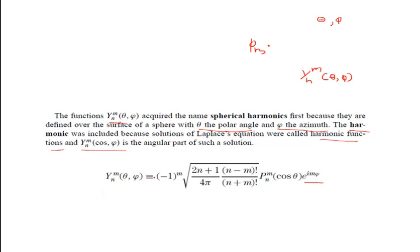The spherical harmonic is given by: Y_n^m(θ,φ) = (−1)^m √[(2n+1)/(4π) · (n−m)!/(n+m)!] · P_n^m(cosθ) · e^(imφ).